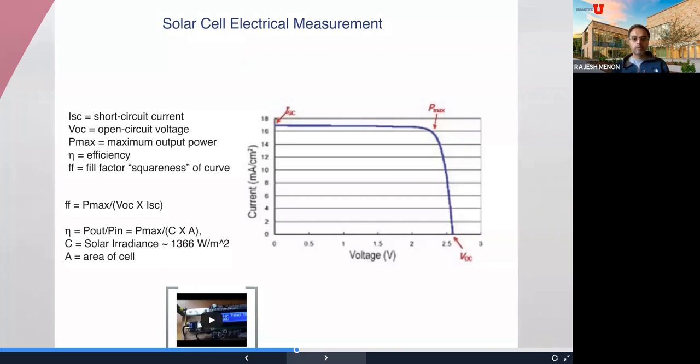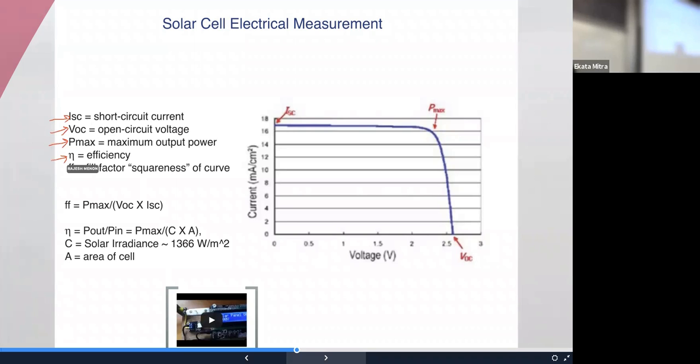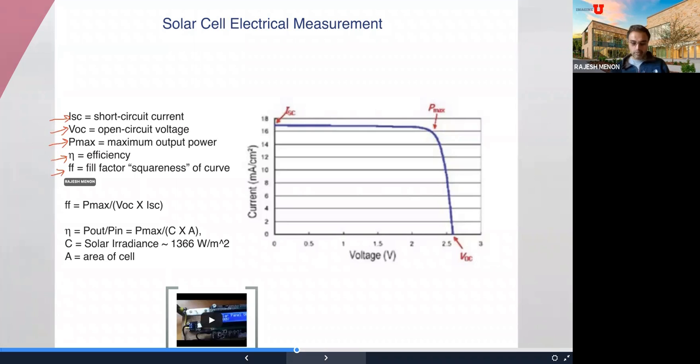Just to confirm what we are trying to do is solar cell electrical measurements. We have short circuit current, open circuit voltage, maximum output power, efficiency, fill factor definitions are shown here. Of course, in order to do this, you have to illuminate the solar cell. That's what we're going to talk about.